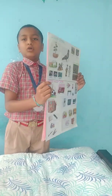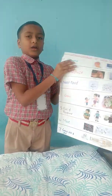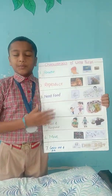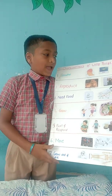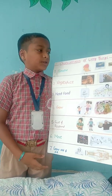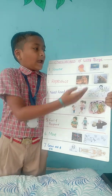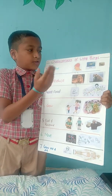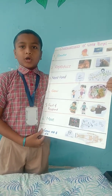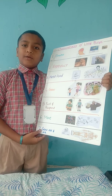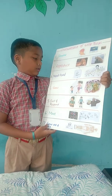Now I will show you the characteristics of living things. First, we breathe. Aquatic animals breathe from gills, and small insects breathe from spiracles. Second, reproduce — all living things give birth to young ones and reproduce.